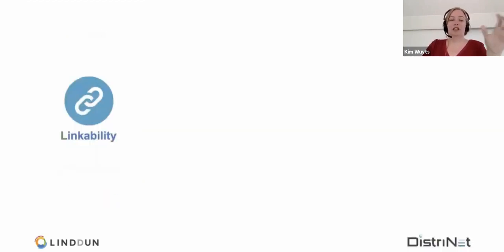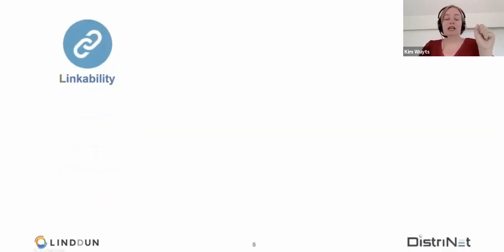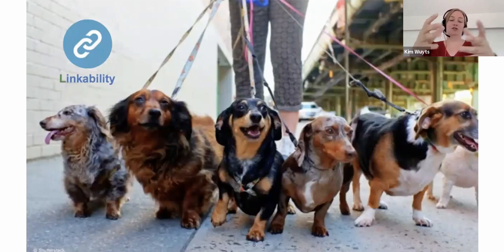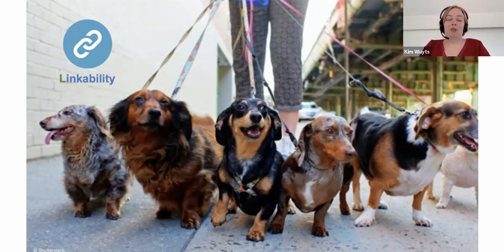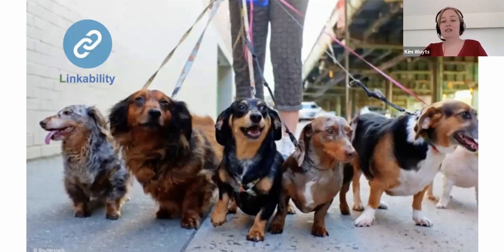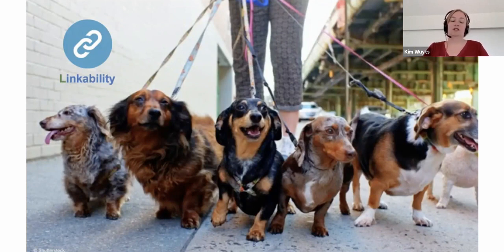There's also a different kind of linkability, which is less about identifiability — more about the societal aspect. That's linking multiple individuals together based on one or several properties, like all these dogs that are connected to the same person. When you talk about linkability of different individuals to the same property, it can be people who live in the same neighborhoods and have the same type of disease. That could have some impact on the fees that an insurance company would ask, because certain areas would have a higher risk of a certain disease. So that's more the societal impact than an individual privacy impact.